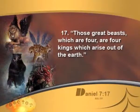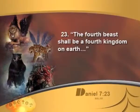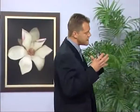Revelation 17 unlocks Daniel 7 for us: the great sea is a place of nations, multitudes, peoples and tongues. And what about the four beasts? Daniel 7 verse 17 says those great beasts which are four are four kings which arise out of the earth. Only the Bible can tell you what the Bible means. Daniel 7 verse 23 says the fourth beast shall be a fourth kingdom on earth — so a beast can represent either a king or a kingdom.